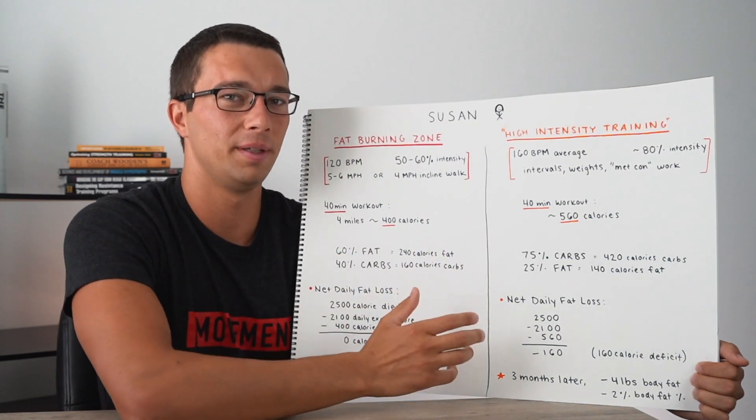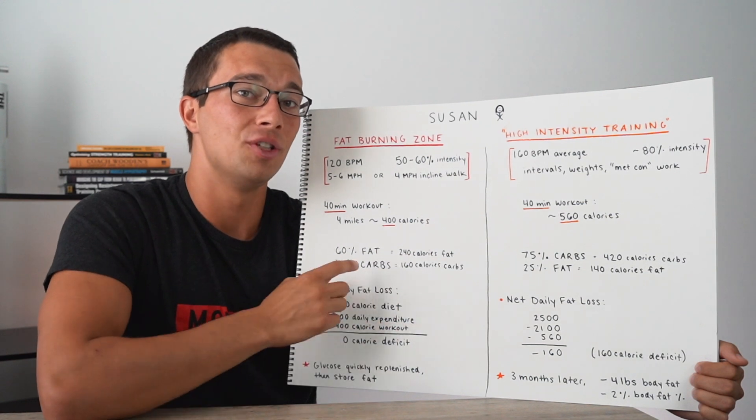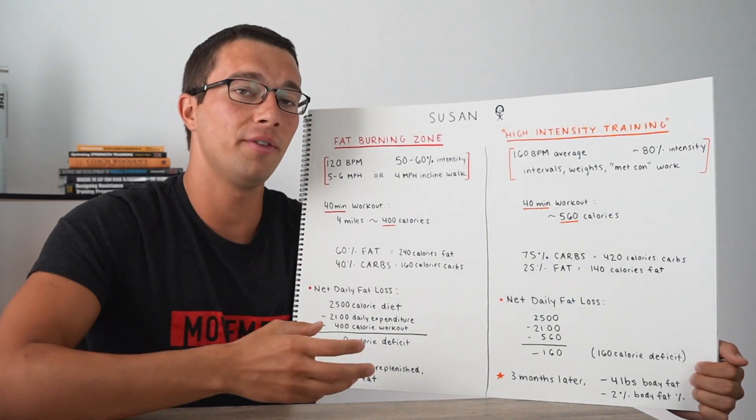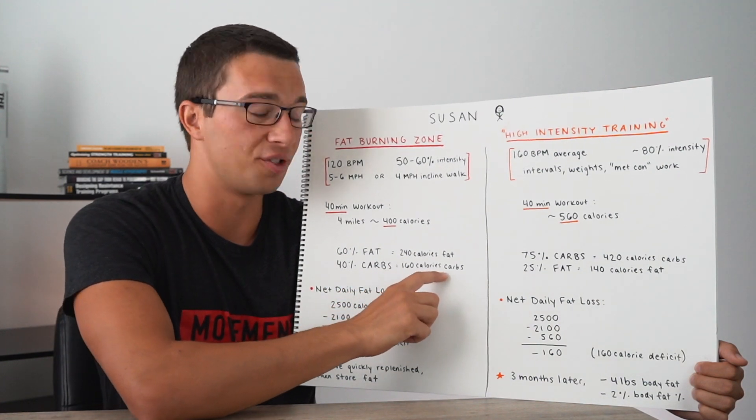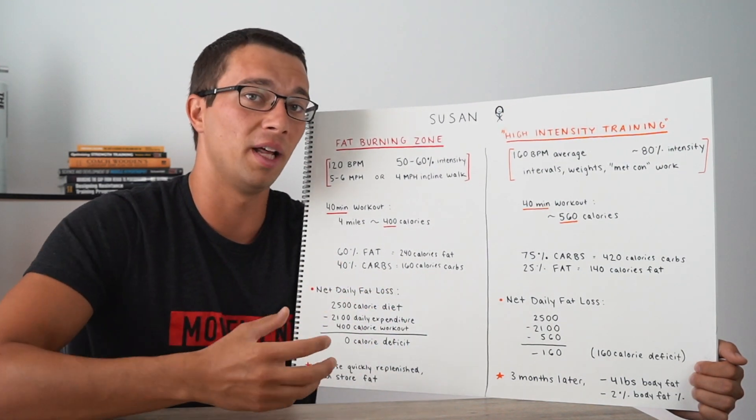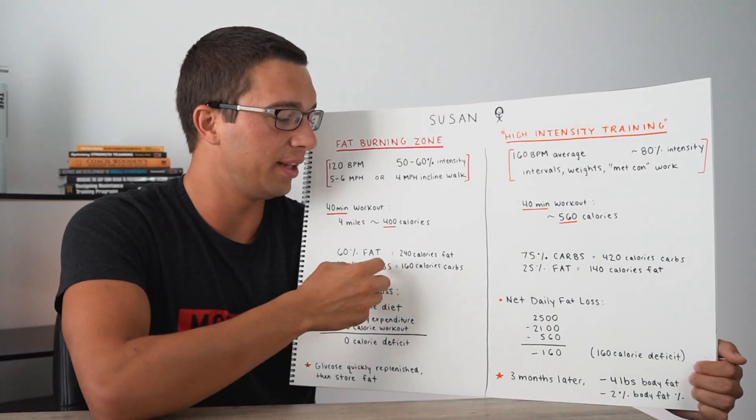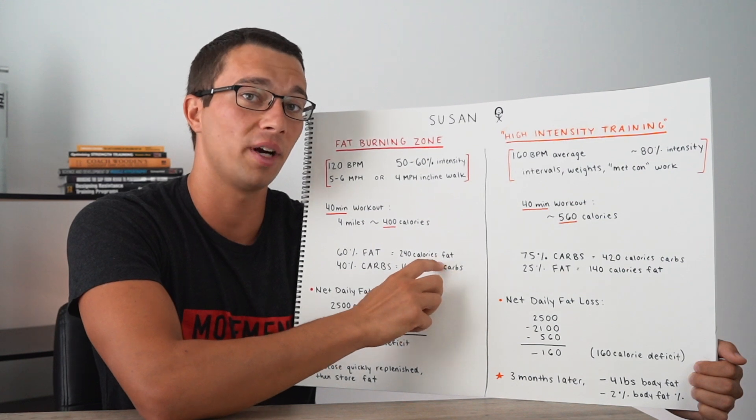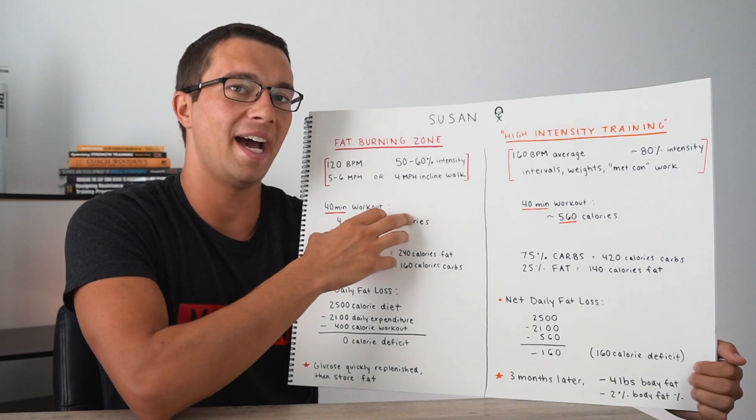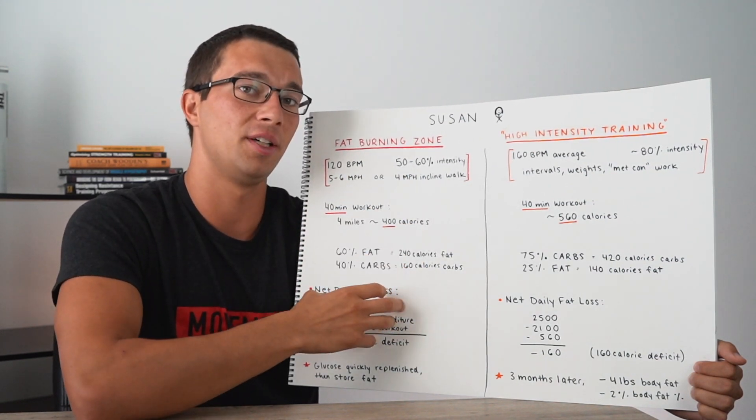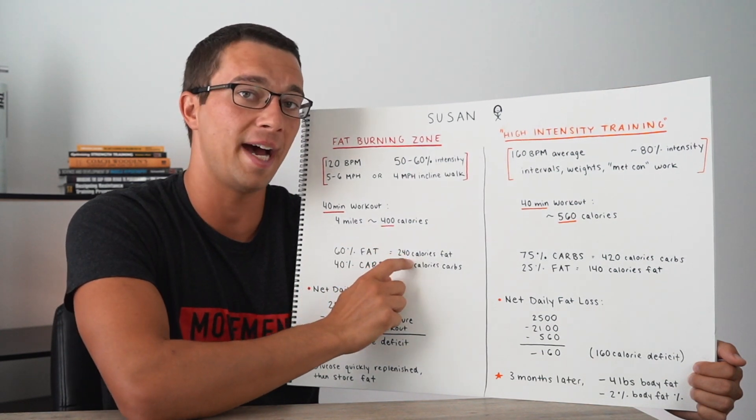And this is where the difference really matters. So in the 24 hour period following the fat burning zone, Susan actually replenished all of her muscle glycogen pretty quickly because she only burned 160 calories from her carbohydrate stores. So in her next meal, she replenished that. And then over the next 24 hour period, she actually just put back on that body fat that she lost during the workout. Because over here, we don't have a total calorie deficit, there's no way for Susan to actually lose body fat percentage over time. Even though during the workout, she lost a higher percentage of calories from fat.